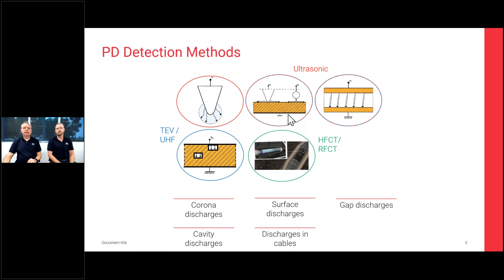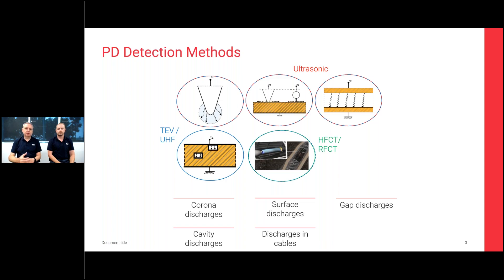Gap discharges from floating metal are also detected by TEV, as well as ultrasonically. TEV will detect very high levels of surface discharge — particularly tracking towards earth — and very high corona. TEV can also detect discharges down cables up to around 50–200 meters from the switchgear. The TEV technique has potential to detect all discharge types but is primarily deployed for cavity-type discharges.